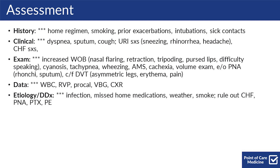On the exam, you should be noting increased work of breathing like nasal flaring, retractions, tripoding, pursed lips, difficulty speaking, whether they're showing any cyanosis, tachypnea, or wheezing, whether they're altered or looking cachectic, and whether or not they have a volume exam suggesting they're volume up. Also be looking out for DVT signs like asymmetric legs, erythema, or pain that might suggest the patient is clotting and could have a PE.